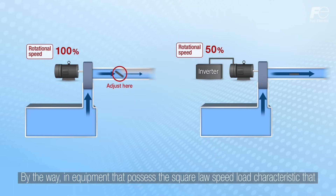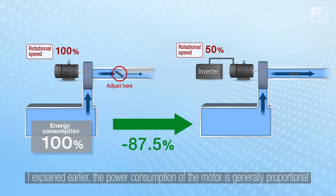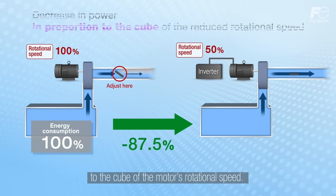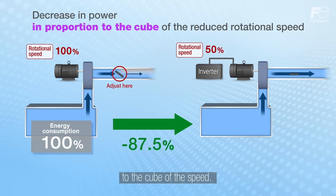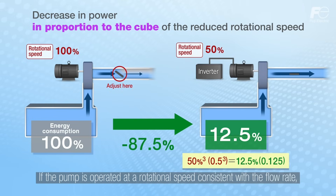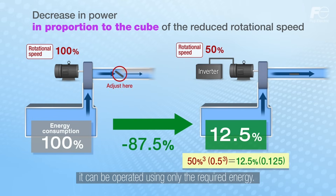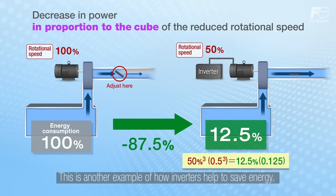In equipment that possesses the square law speed load characteristic, the power consumption of the motor is generally proportional to the cube of the motor's rotational speed. If the motor's rotational speed is reduced, its output will decrease in proportion to the cube of the speed. If the pump is operated at a rotational speed consistent with the flow rate, it can be operated using only the required energy. This is another example of how inverters help to save energy.